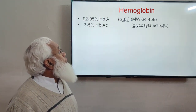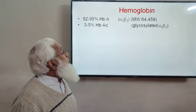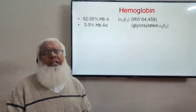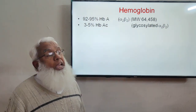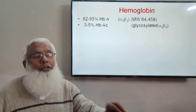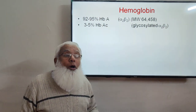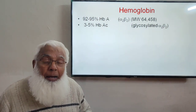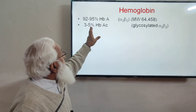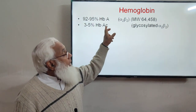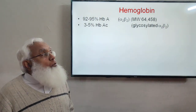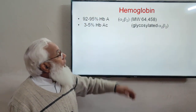Hemoglobin A1c accounts for 3 to 5 percent of hemoglobin. It is the same adult hemoglobin but with glucose attached — it is glycosylated hemoglobin. This is a very important test for diabetic patients: people with prolonged high blood glucose levels show increased concentrations of HbA1c.